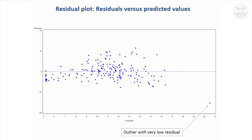If there was a reason that this observation was wrongly recorded, you would want to take it out of the data set. If there wasn't a reason, you would have to keep it in — and then you'd be better off working with the ranks and the ranked correlation coefficient.